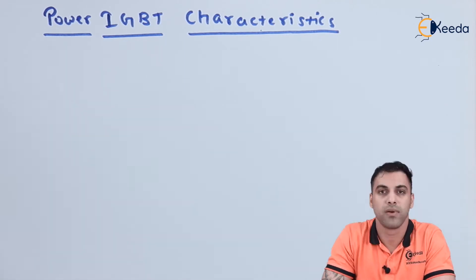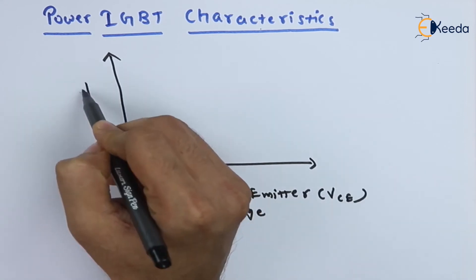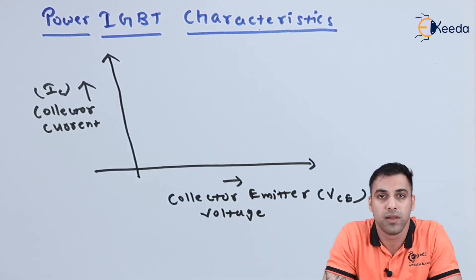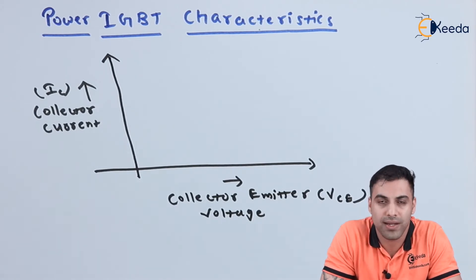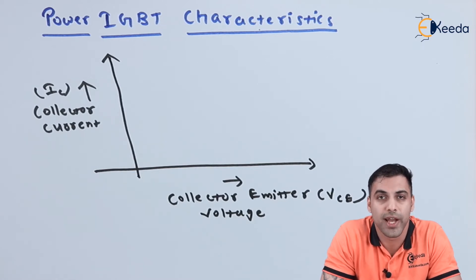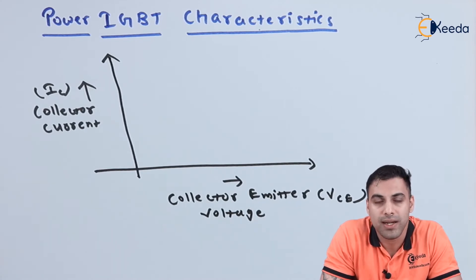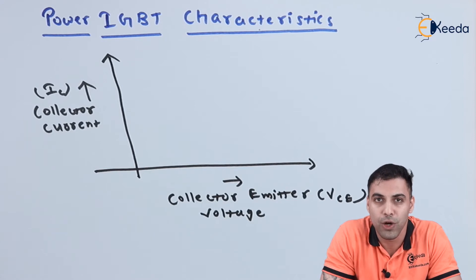The characteristics of a power IGBT is defined as the rate of change of collector current with respect to the collector-emitter voltage. If we connect the collector and emitter terminals to an external voltage source and apply some gate voltage to the gate terminal, then the collector current starts flowing through the power IGBT. If we monitor the collector current with change in the collector-emitter voltage, the curve of the collector current looks like this.